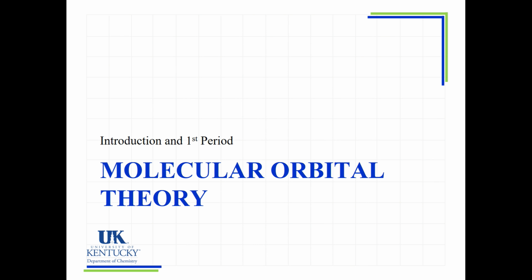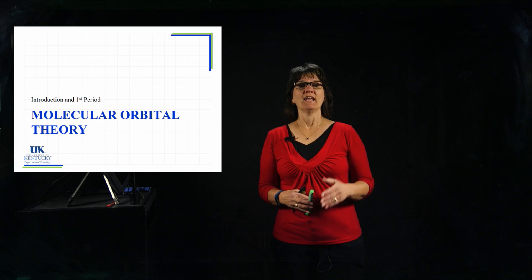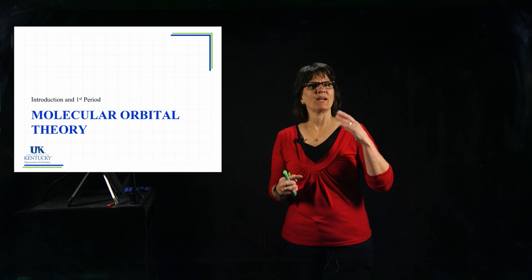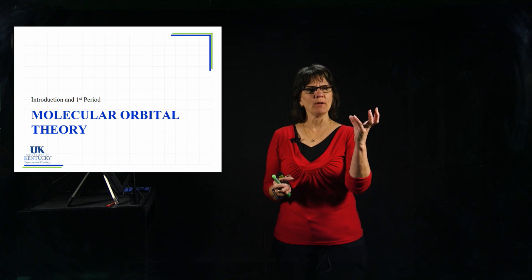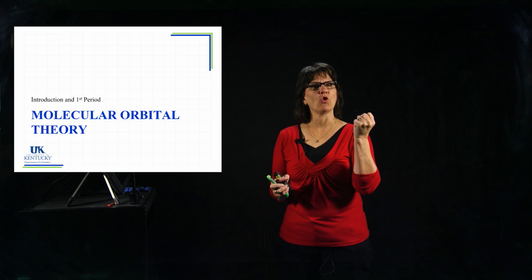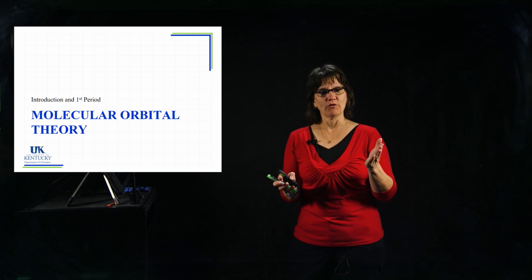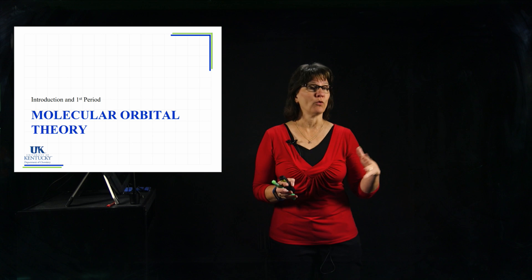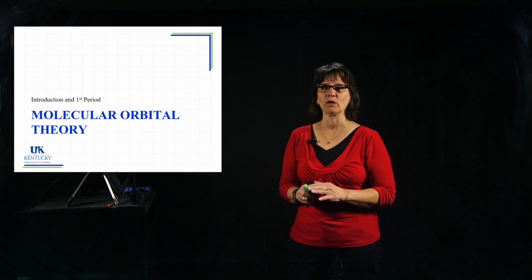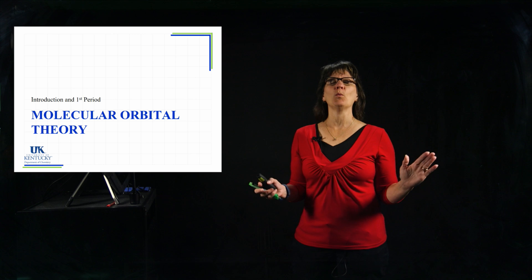We have just come off a whole series of lessons about valence bond theory. Valence bond theory is one way of looking at bonding. To recap what it is, you have atomic orbitals within an atom and they mathematically mix to form what we call hybrid orbitals. That is a really good theory for bonding and it works very well for organic chemistry. But it is not the only way of looking at bonding.